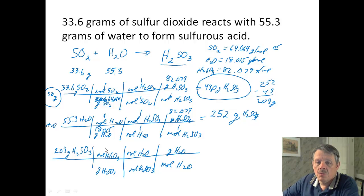So we know that one mole of H2SO3, we already figured out that that weighs 82.079, and all of our coefficients are 1. And one mole of water weighs 18.015 grams. So when we do the math here, we come up with 45.9 grams of water that we did not use.